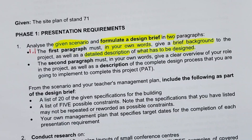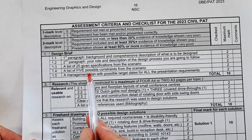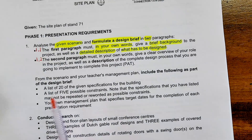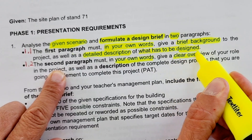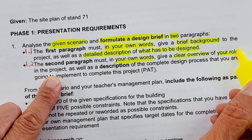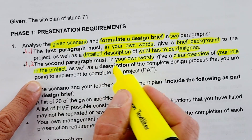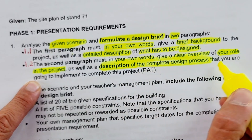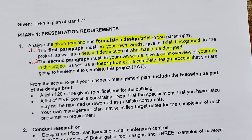Your second paragraph is 1.2. It refers to your role and description of the design process you are going to follow. Again in your own words, give a clear overview of your role — that is very important — as well as a description of the complete design process you are going to implement to complete this PET. These are the first two points.